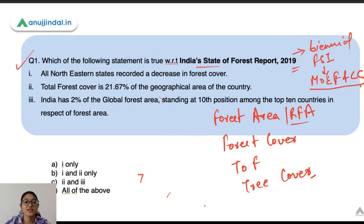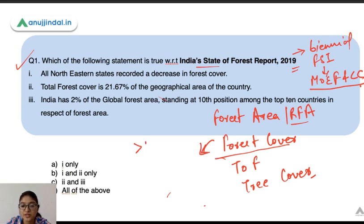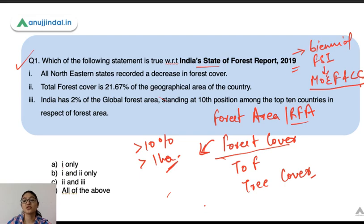Now, what is forest cover? Forest cover is the forest canopy area irrespective of its legal status — whether or not it is mentioned in government records does not matter. All forest canopy areas having a canopy density of more than 10% and a land size of more than 1 hectare fall under forest cover.